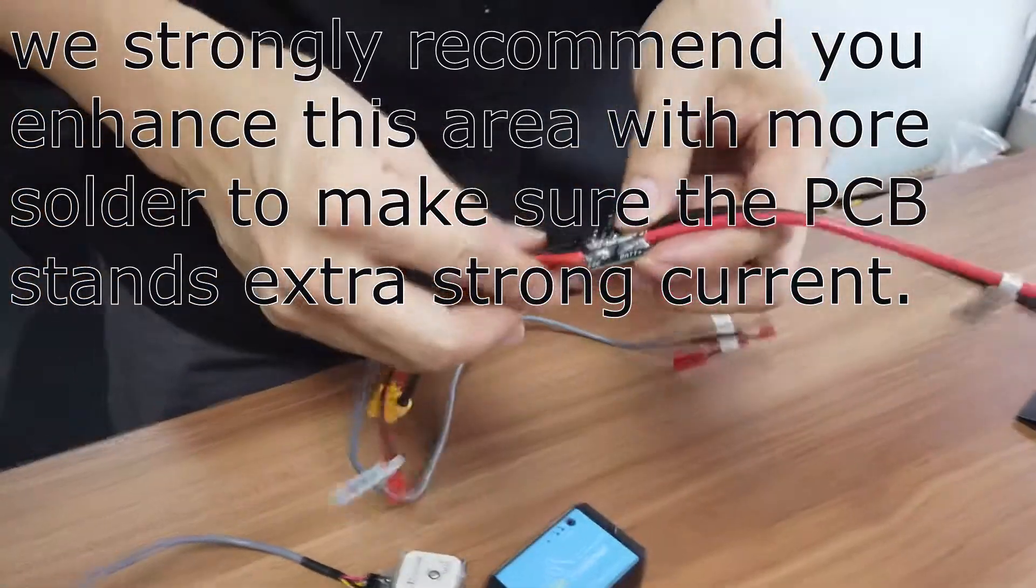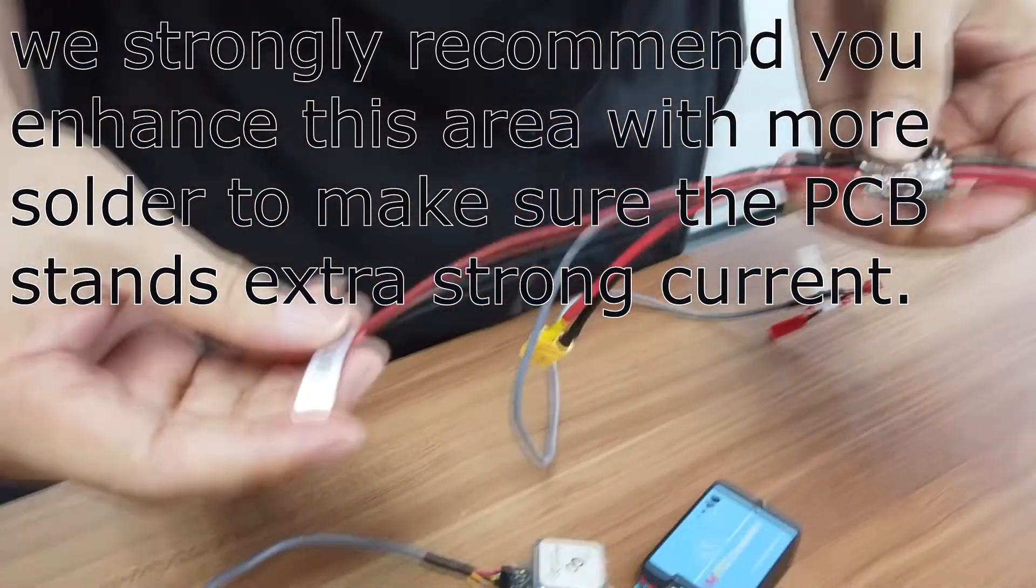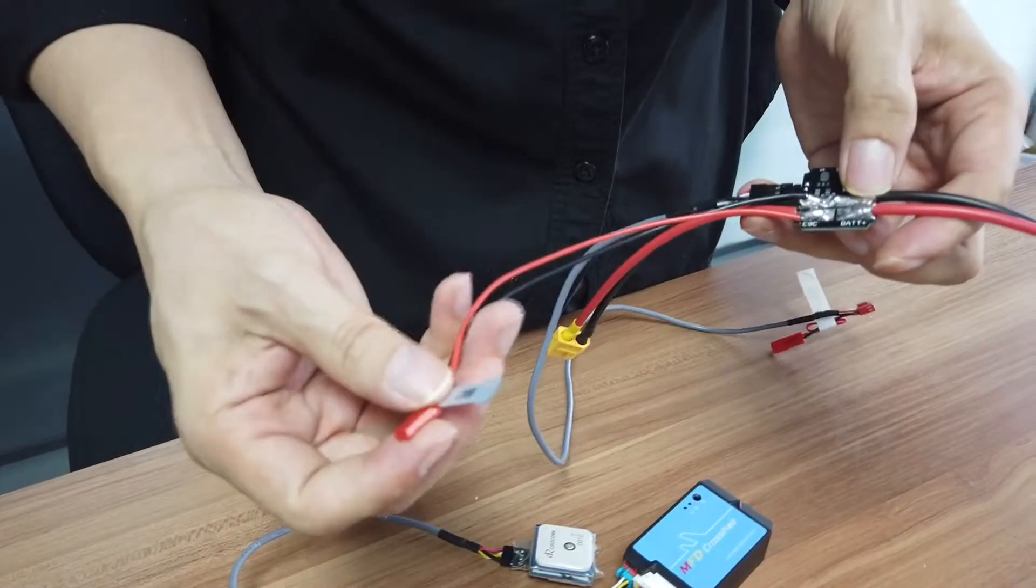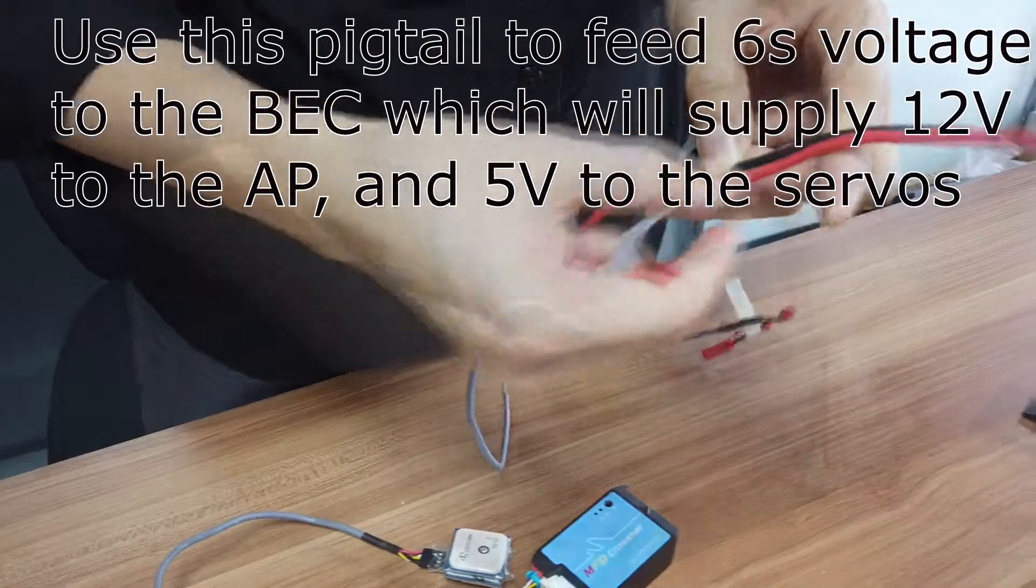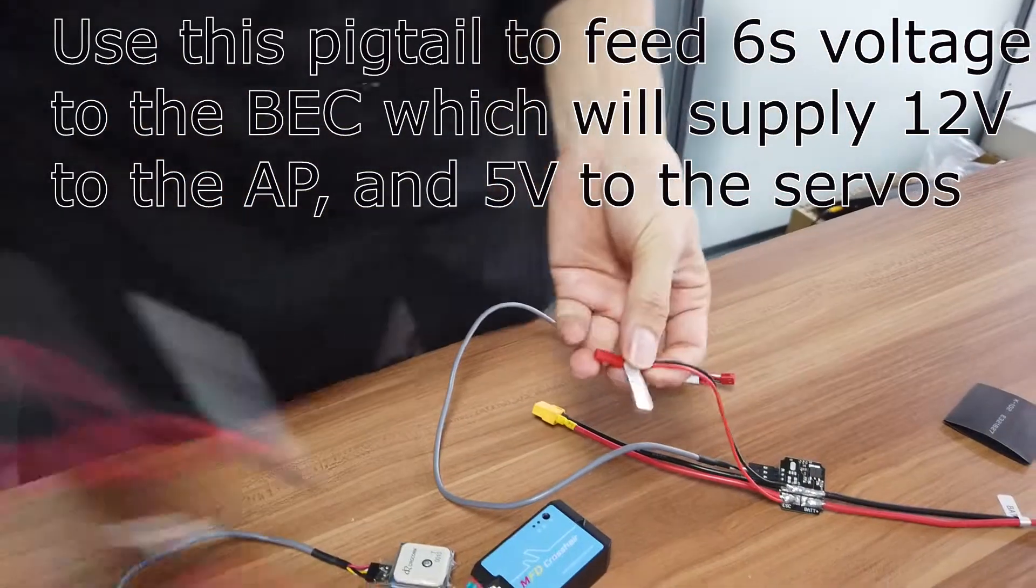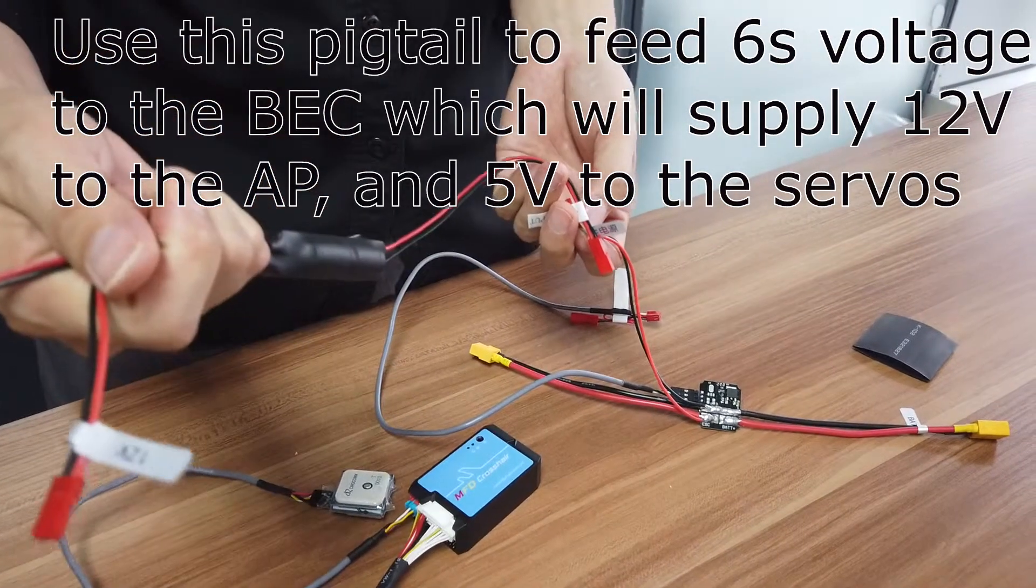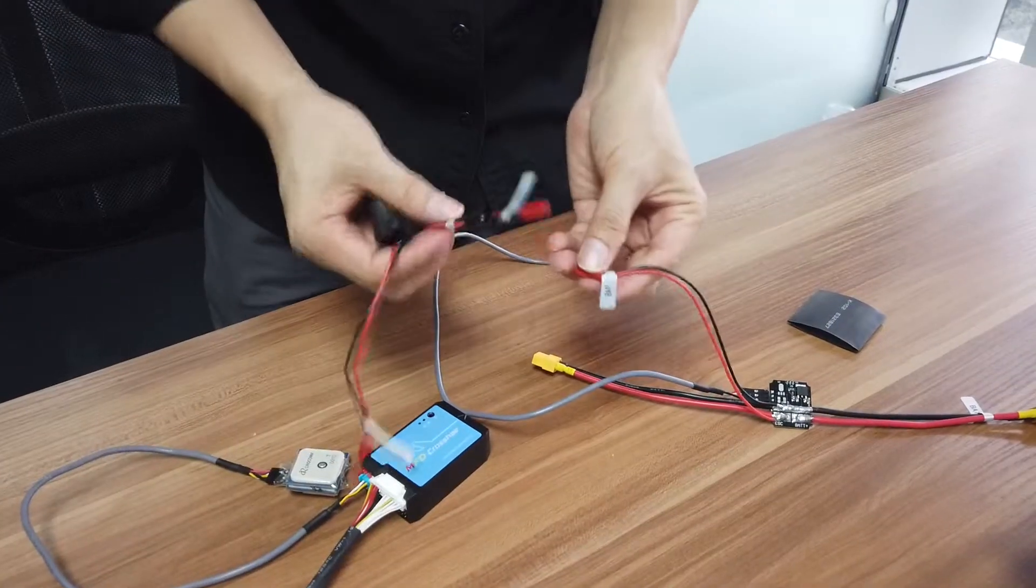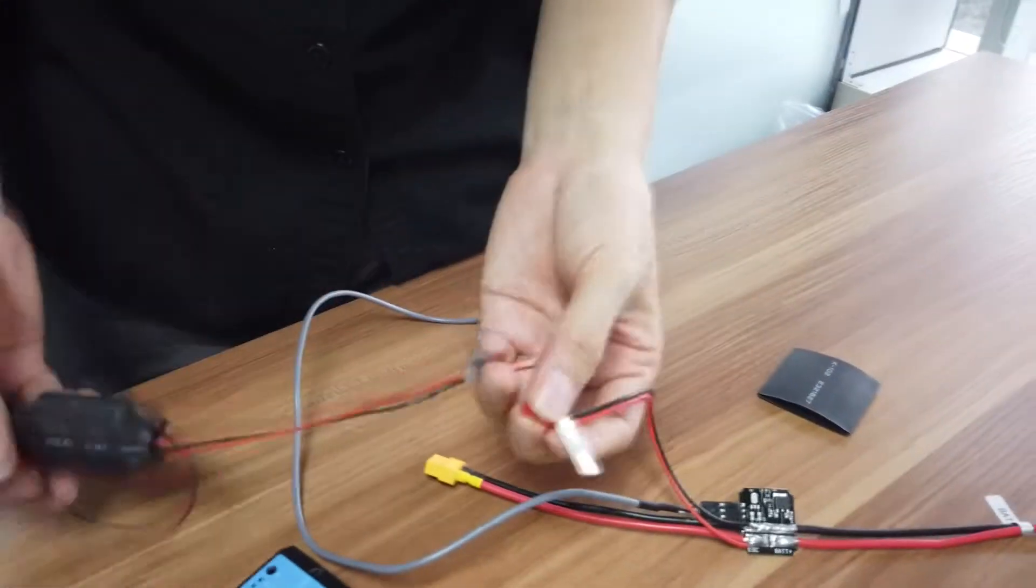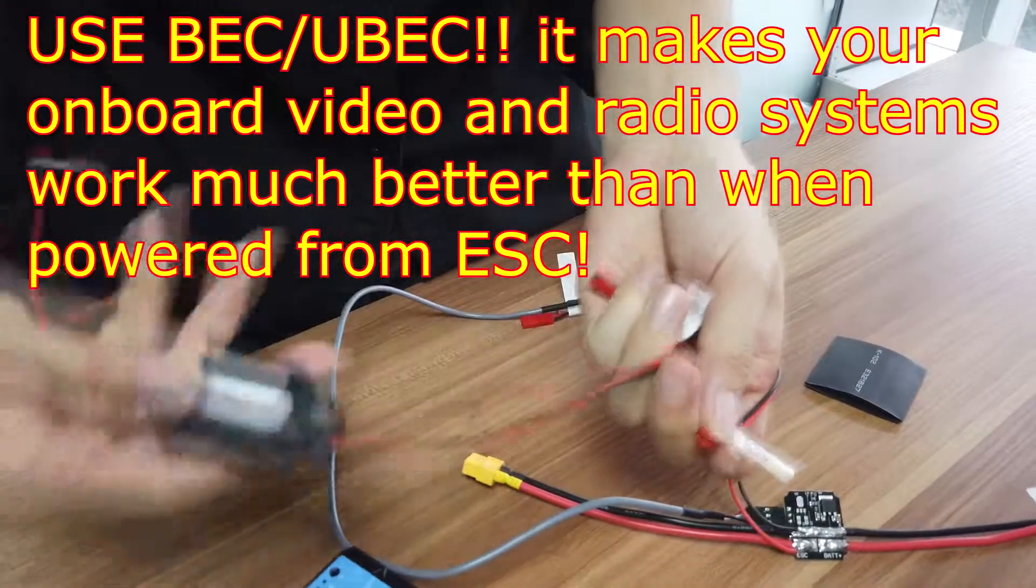And this little pigtail, this red one. Yeah, yeah. Where does it go? We use this cable to get power from the main battery. We connect this BEC to get 12 and 5V for autopilot. We connect this cable - this is the input of BEC.